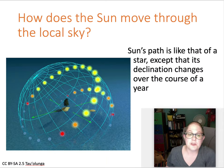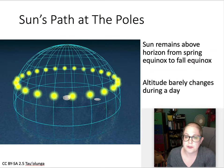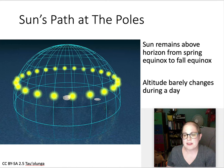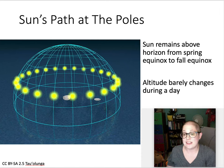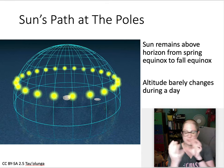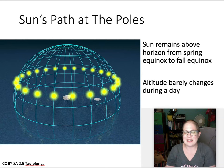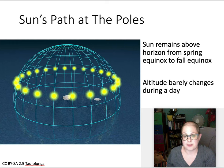Where you are on Earth changes all of that. If you're at the north pole in summertime, the Sun stays above the horizon the whole day. You've probably heard that at the poles there are six months of daylight and six months of darkness — this is true. Because of the Earth's rotation, the Sun will never set at the north pole in summer. If you're at the equator, you see something very different.